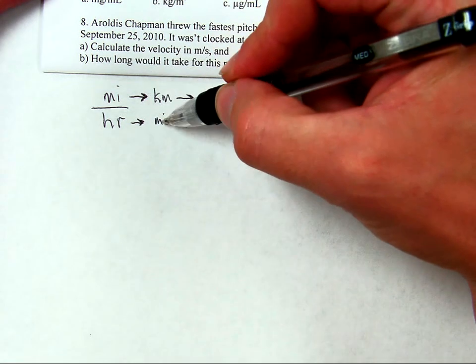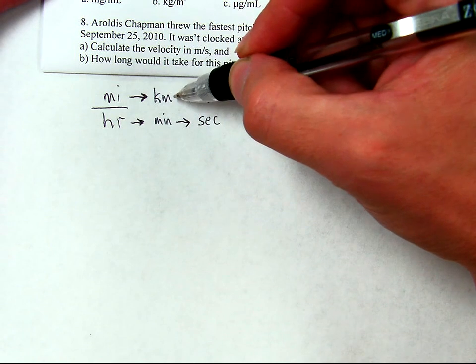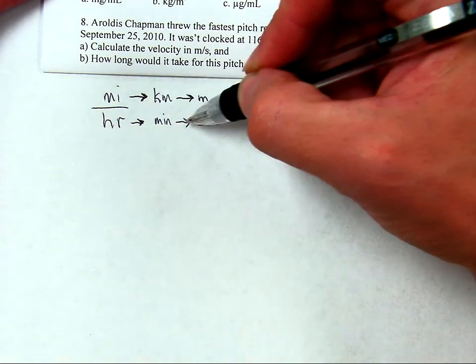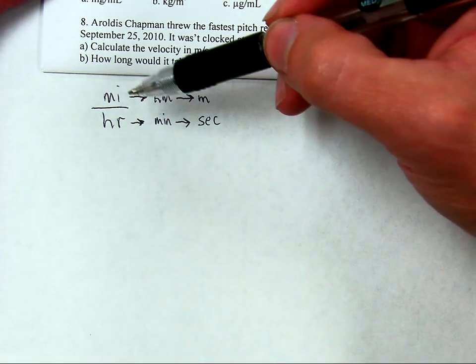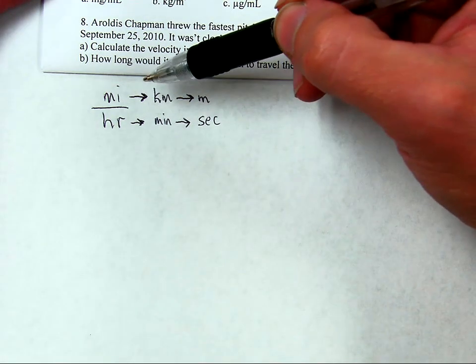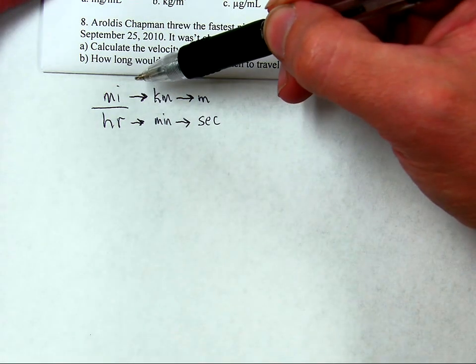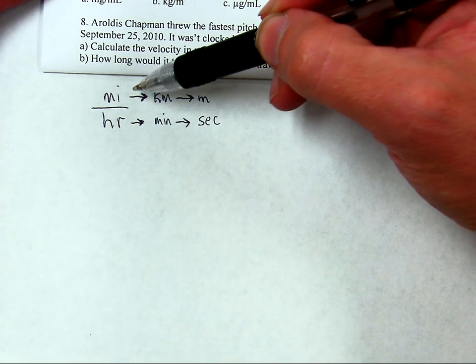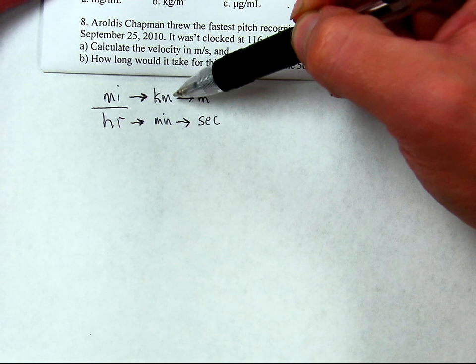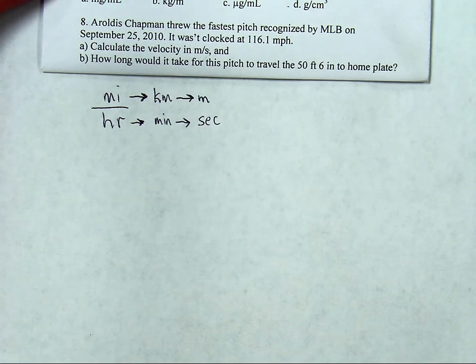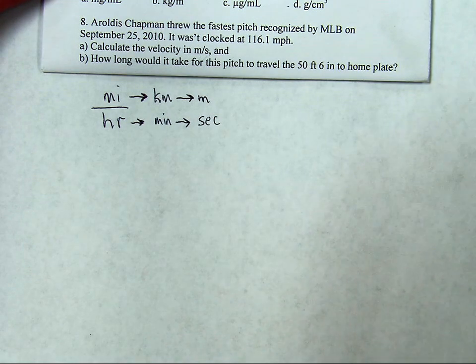First these couple of changes, then these couple of changes. In fact, I'm going to have to have how many factors in here? One, two, three, four conversion factors. Let's do it.